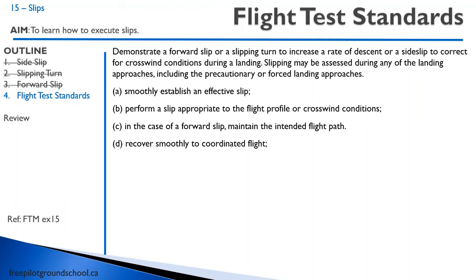The slip is a testable flight test item on your rec or private pilot flight test. You're going to be asked to do a forward slip or a slipping turn. The key thing is to be smooth — don't just jam on the rudder and have the plane yaw all over the place. Just gently go into a slip; it doesn't have to be too aggressive. Recover to coordinated flight. There's a chance the examiner will incorporate this into an emergency scenario, like a flapless landing where you have to do a forward slip to lose altitude, or during a forced approach.